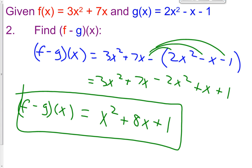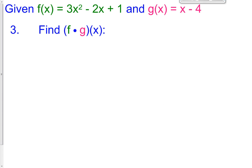x squared plus 8x plus 1. Let's now try when we multiply f times g of x. So f times g of x happens when we take whatever f(x) equals, which is 3x squared minus 2x plus 1, and we multiply it by whatever g(x) is, which is x minus 4.